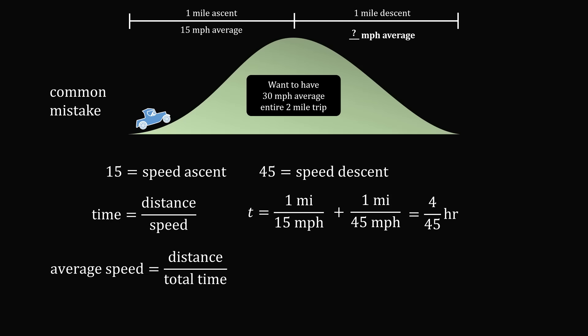Now, the average speed for the entire trip will be the total distance divided by the total time. We know the total distance is 2 miles, because it's 1 plus 1, and we have calculated the total time is 4 over 45. But this will work out to an average speed of 22.5 miles per hour, which is not equal to the 30 miles per hour average that we want. We are going too slow on the descent to get an average speed of 30 miles per hour. Clearly, we will need to increase the speed of the descent to average 30 miles per hour for the entire 2 mile trip.